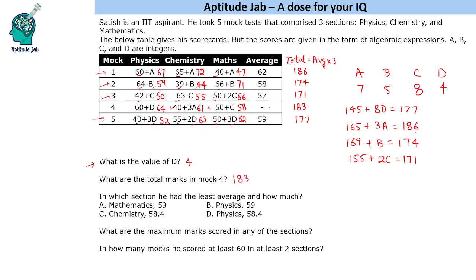In which section he had the least average and how much? Let us find the average in these sections because the options are close. As a practice we generally start from the left side or the first one. Let us just find this average. This is 126, 176, 240, 292. 292 divided by 5 we get 58.4.